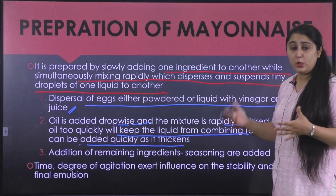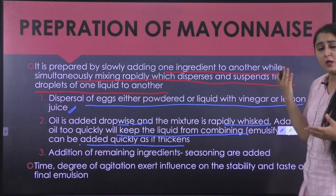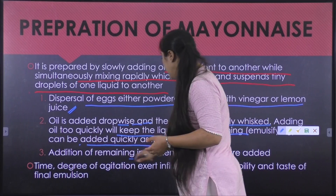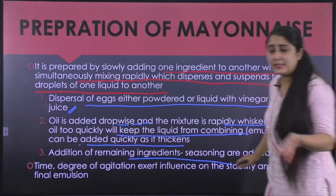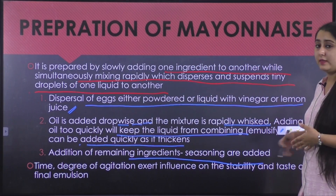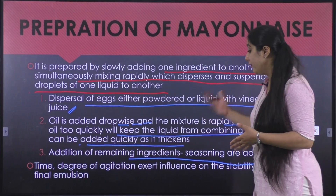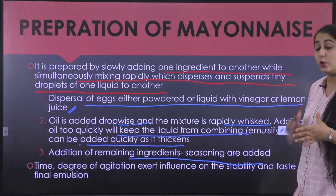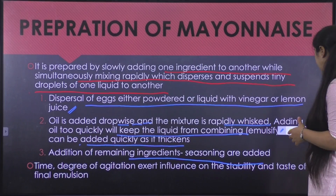Mixing can be done by hand or using certain mixers. Then the remaining ingredients — whatever seasonings are desired — are added at the end. The time and degree of agitation will all have an influence on the final product.